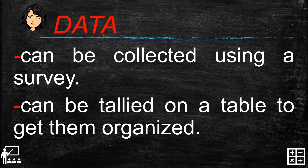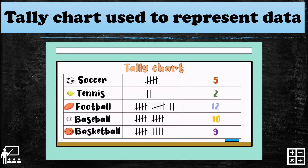Data can be collected using a survey and tallied on a table to get it organized — that's what you call a tally chart. A tally chart is used to represent data. In this example, the tally chart lists sports: soccer, tennis, football, baseball, and basketball. We use tally marks to represent the frequency, and the total frequency is written as a numerical value in the last column.